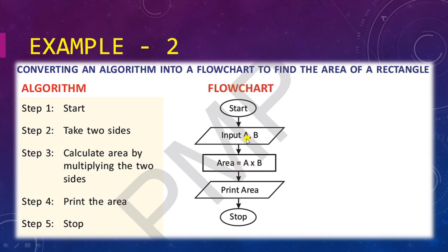Suppose A has a value 5 and B has a value 4, so 5 multiplied by 4 equals 20. The area is 20. Then we are printing the area. While inputting and outputting we use the parallelogram, so we have used a parallelogram. After everything is done we stop.